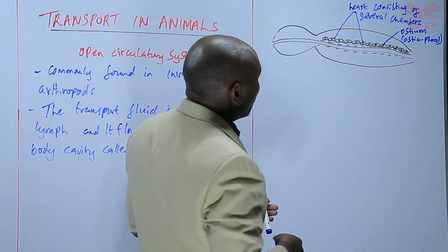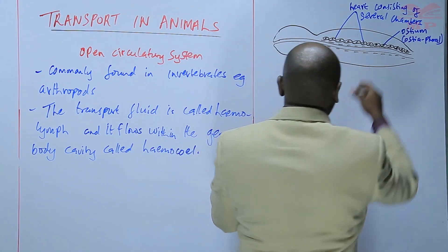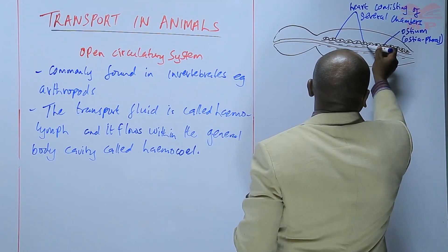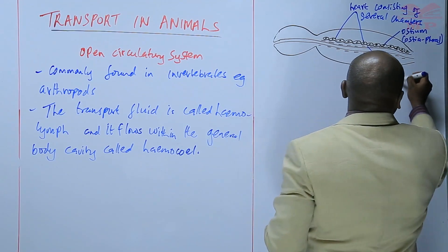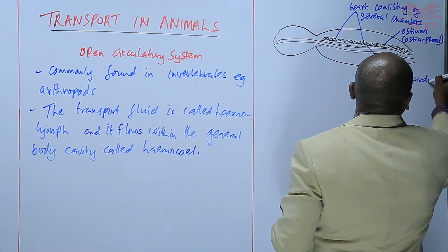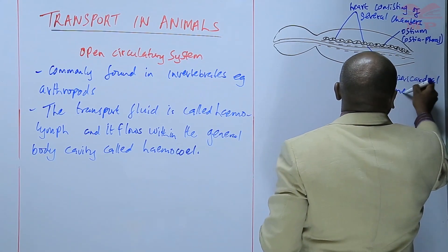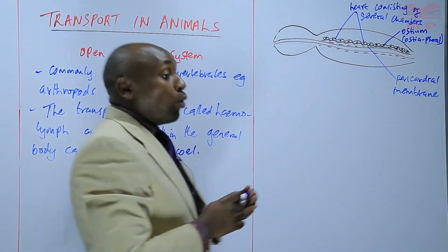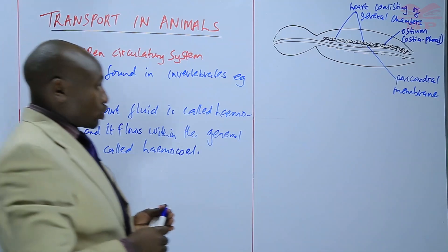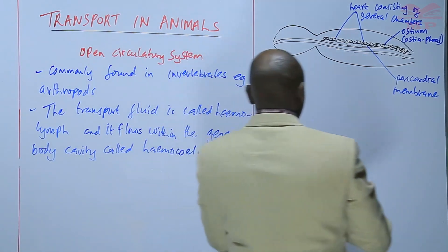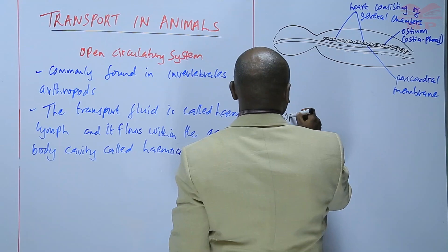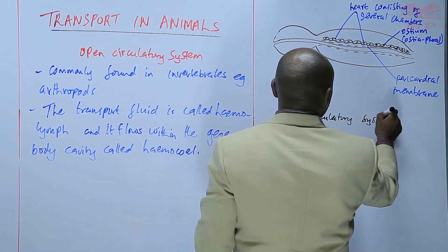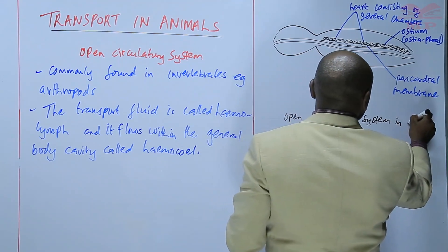Below the heart, there is a membrane, and this membrane we refer to as the pericardial membrane. So basically, we are discussing the structure of the open circulatory system in a cockroach.